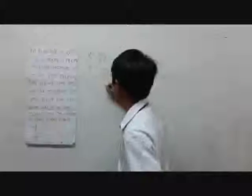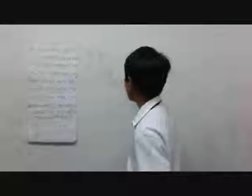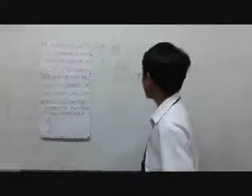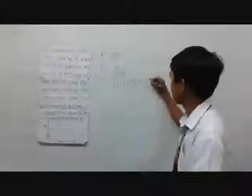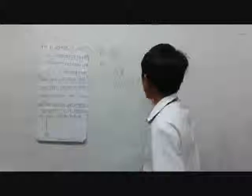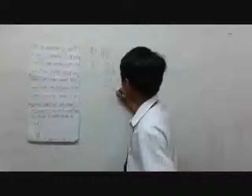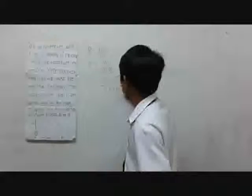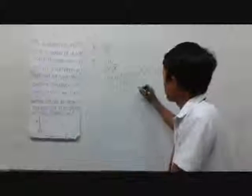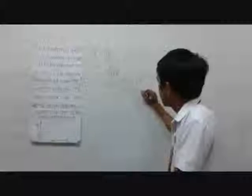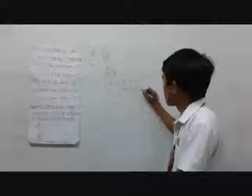Mass of electron is 9.11 times 10 to the negative 31, times the velocity of 1.41 times 10 to the 6, all over charge of the electron 1.6 times 10 to the negative 19, times the radius of 5 times 10 to the negative 2. The answer is 1.6 times 10 to the negative 4.